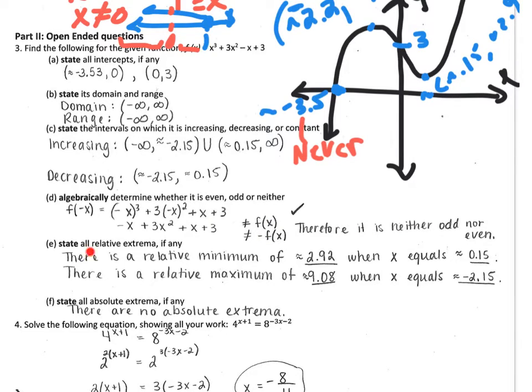When you write relative extrema, you're looking for local max and mins, and you need to write them as sentences. If you have the phrase STMT with a question mark, that statement means you're missing the statements and you wrote them as points, or you didn't say whether it was a min or max. You need that information as well, so write them as full sentences.